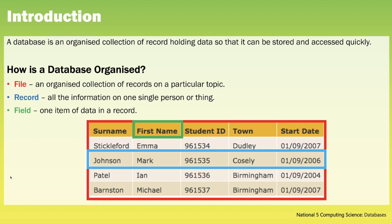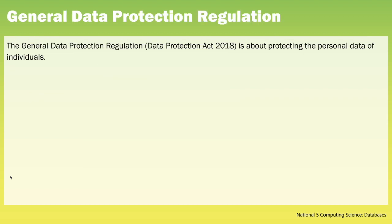Now as we are talking about databases and our databases may handle personal information, we need to consider the General Data Protection Regulation. GDPR, or the Data Protection Act 2018, is about protecting personal data of individuals. Any information about you that can be used to directly identify you is personal data — for example your name, date of birth and address.